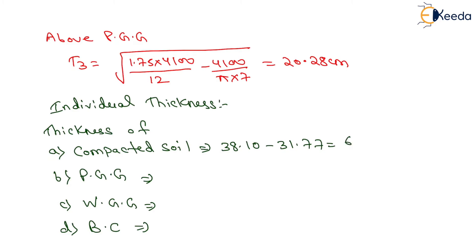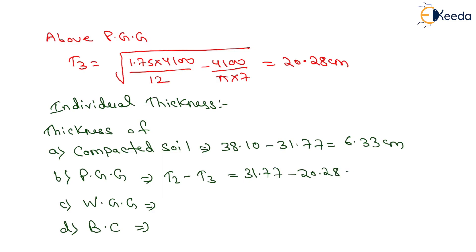So the compacted soil layer thickness equals 6.33 cm. The thickness of poorly graded gravel equals T2 minus T3, that is 31.77 minus 20.28, which equals 11.49 cm.